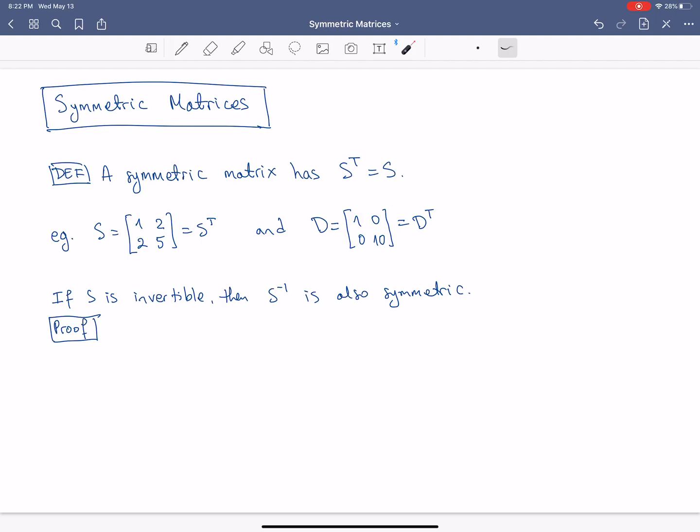The formal definition of a symmetric matrix is S transpose equals S. What does that mean? It means that the rows of the matrix are the corresponding columns. So the first row is the same as the first column, the second row is the same as the second column, transposed of course. But those are the numbers.